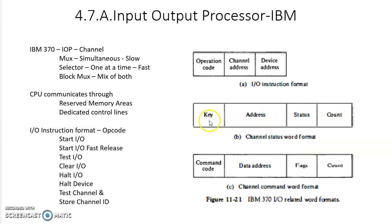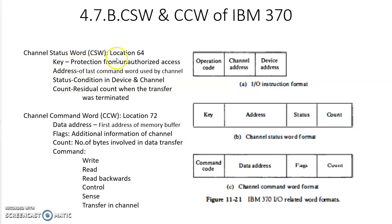The channel status word format has four fields. One is key, which is a protection from unauthorized access — one user cannot access another user's data. The second is the address of the last command used by the channel. The third is status, which indicates the condition of the device and channel. The fourth is count, which gives the residual count when the transfer was terminated — how many bytes were transferred and how many are remaining. Whenever the CPU wants to use the input-output processor, it first asks for this status word.